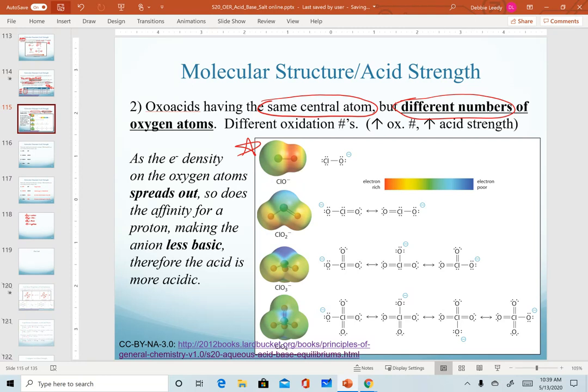We can also look at the electron density in our anions. Here is our hypochlorite ion, our chlorite ion, chlorate, and perchlorate. What's being shown here is the difference in color based on electron densities. In the hypochlorite ion, we have a shift of electron density more toward the oxygen. That means there's a strong affinity for a proton.